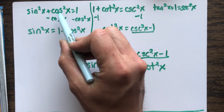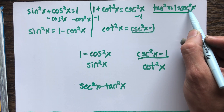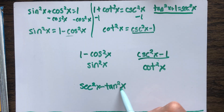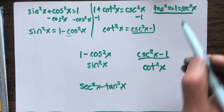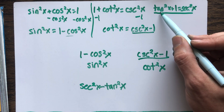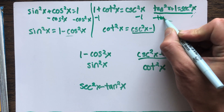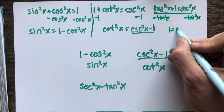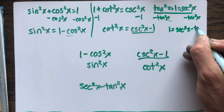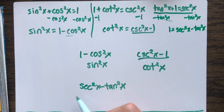Right away, you have squared trig terms and there's subtraction, so you should recognize that a Pythagorean identity could be useful here. Looking at the identities, I notice this one has both tangent squared and secant squared. Can I rearrange it so one side looks like secant squared x minus tangent squared x? Yes — if I subtract tangent squared from both sides, I get one equals secant squared minus tangent squared. So I can just replace that expression with one.